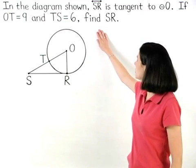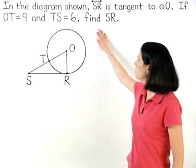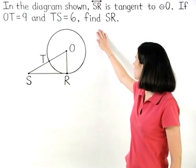In the diagram shown, line SR is tangent to circle O. If OT equals 9 and TS equals 6, find SR.